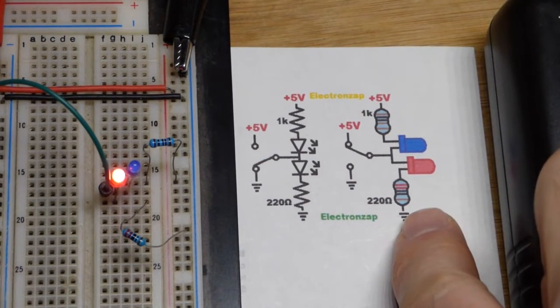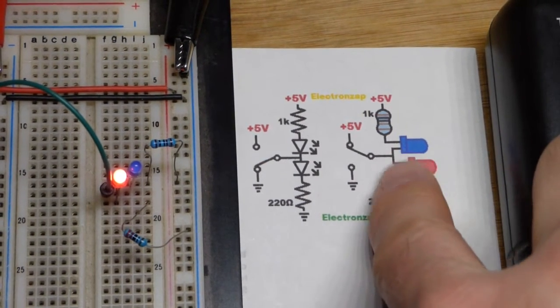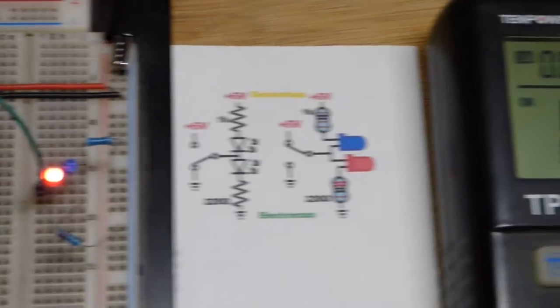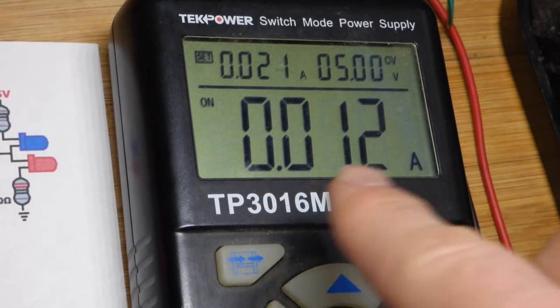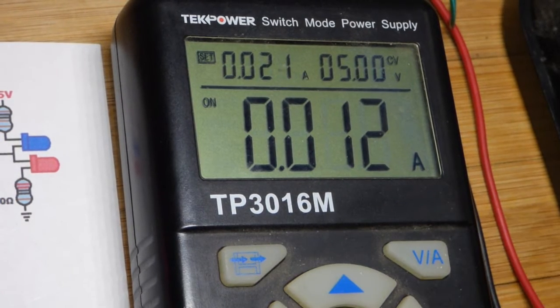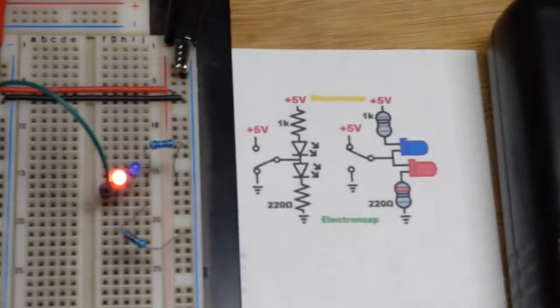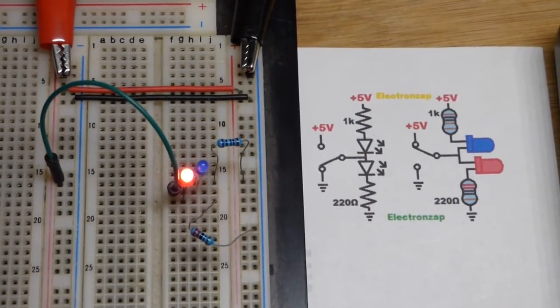There you can see we have about 220 ohm resistor. It drops a little less voltage than the blue LED, and the lower resistor means we're going to get more current. There you can see 12 milliamps of current approximately. This isn't as accurate as a multimeter but it'll probably be within about one, maybe two milliamps of what a multimeter is.